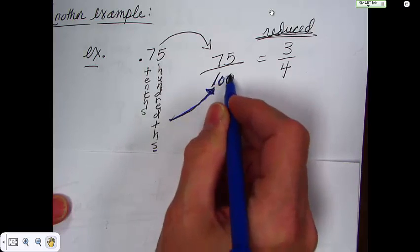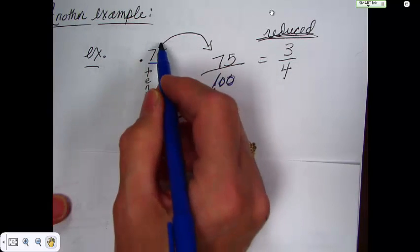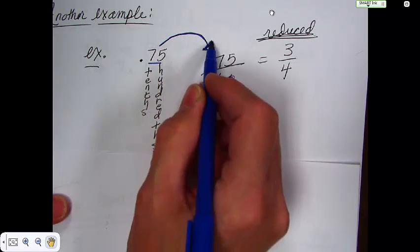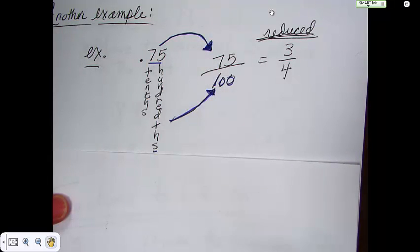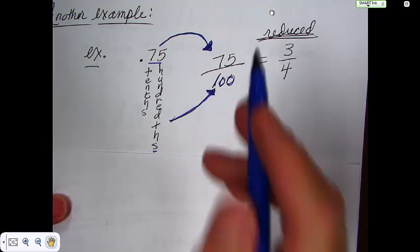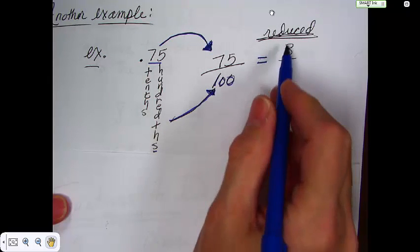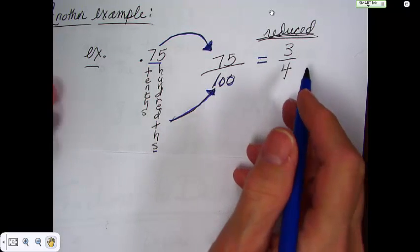And you take the numerator and you put it over here on the top. Take the number out. Remember, no decimal. Get rid of the decimal. Now this one is quick to see that you could reduce it to three-fourths.